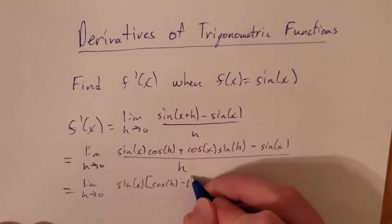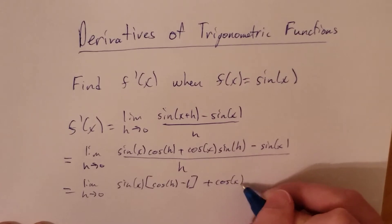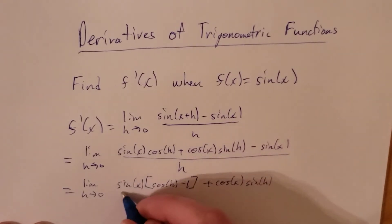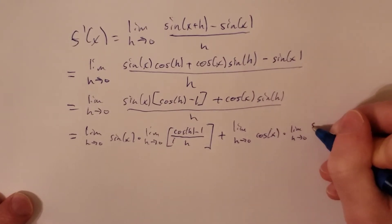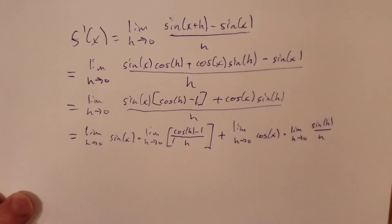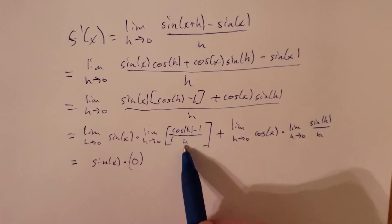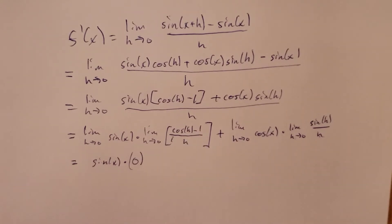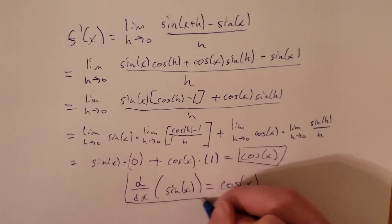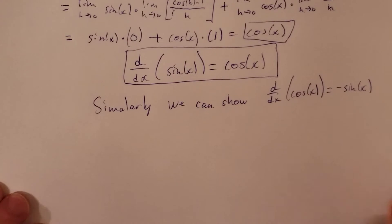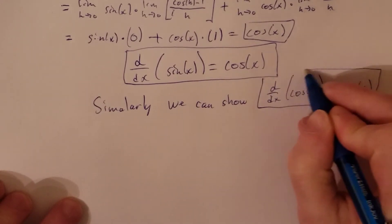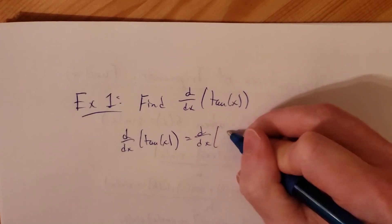To do that, f prime of x is equal to the limit as h goes to zero of sine of x plus h minus sine of x, all over h. And by a formula from PreCal, we have that sine of x plus h is actually sine of x times cosine of h plus cosine of x times sine of h.